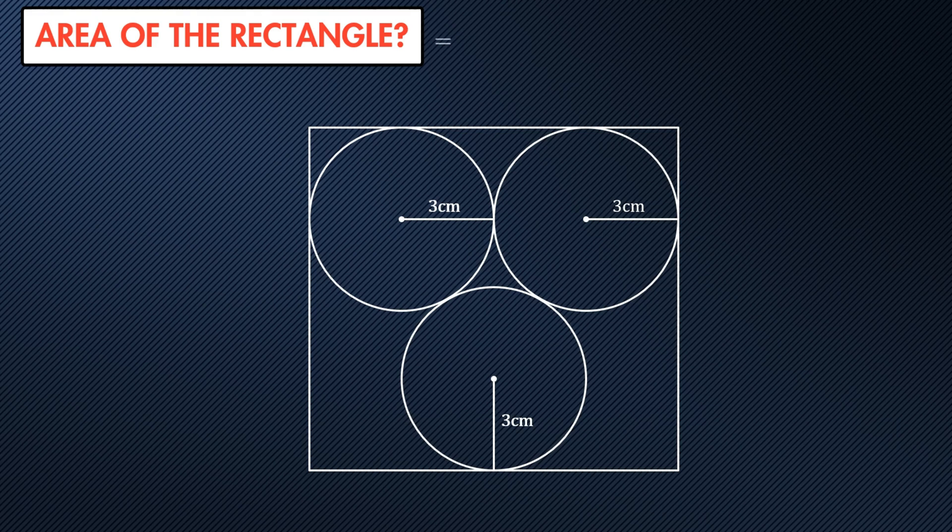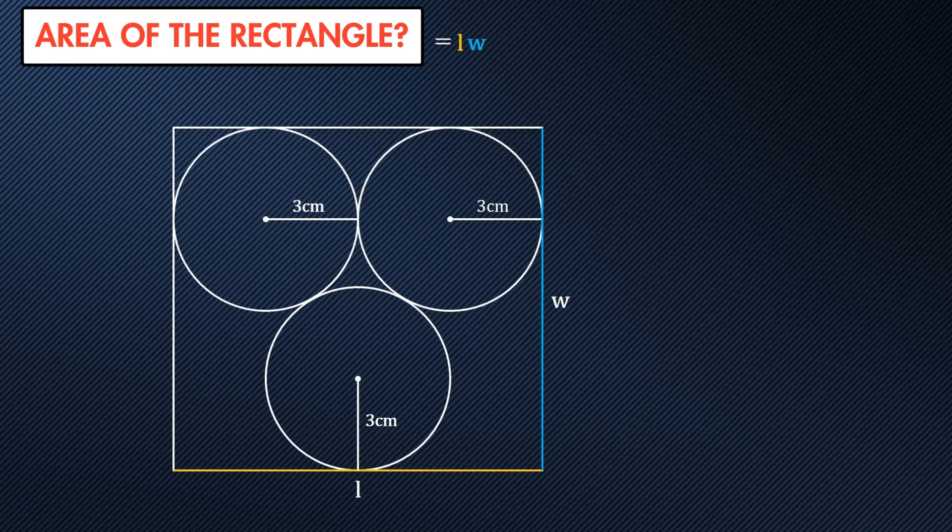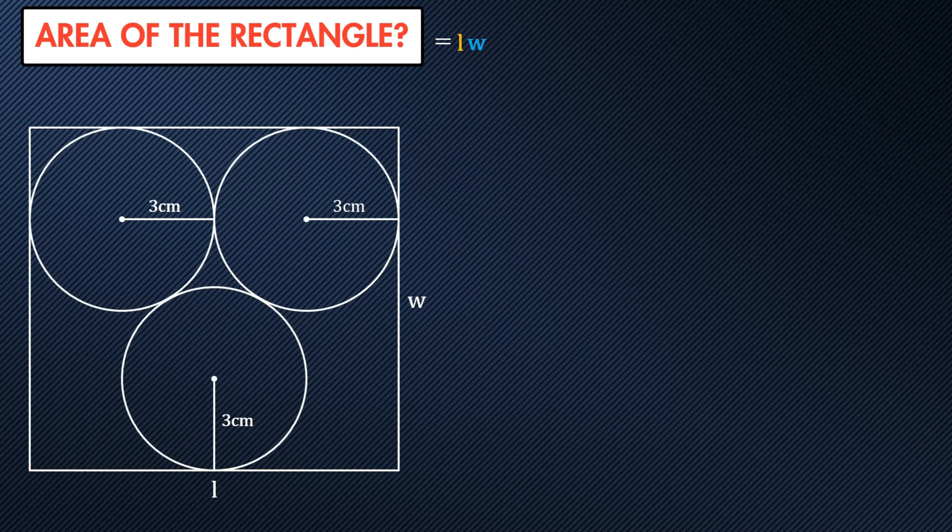As we know, area of a rectangle is length times width. For this question, the first one to work out will be the length. That is the sum of the radii of the top two circles, 3 plus 3 plus 3 plus 3. That gives us a length of 12.